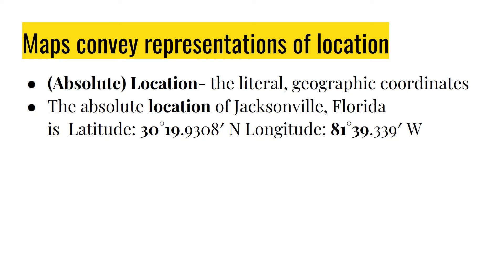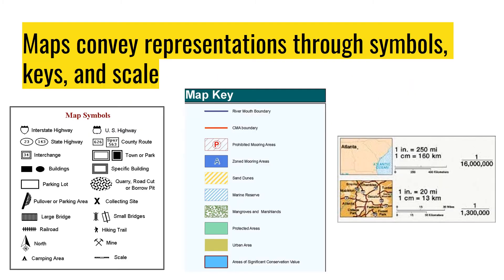Maps convey representations also of location. Absolute location is the literal geographic coordinates of a place. The absolute location of Jacksonville, Florida is latitude 30.19.9308 north and longitude 81.39.339 west. Maps also convey representations through symbols, keys, and scale.